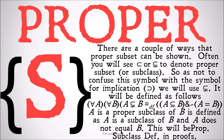There are a couple of ways that proper subset or proper subclass can be shown. Often you will see a backwards implication sign — that is, the subclass sign without a line under it, similar to the greater-than/less-than sign versus the greater-than-or-equal-to sign. Or you'll see the normal subclass sign with a slash through the bottom line to denote a proper subset or proper subclass. So as not to confuse this symbol with the symbol for implication, we're going to use the one with a slash on the line under it, but both of those exist and are out there.